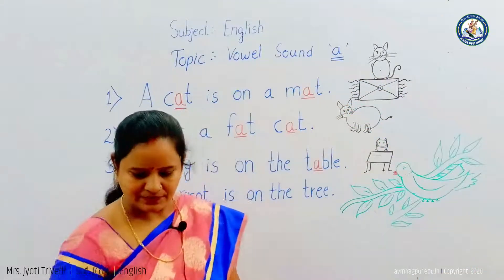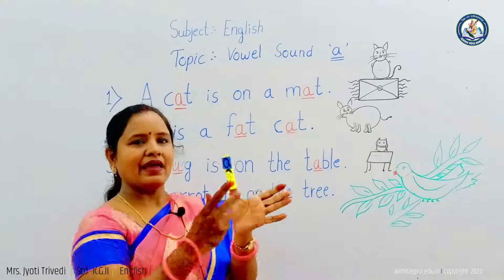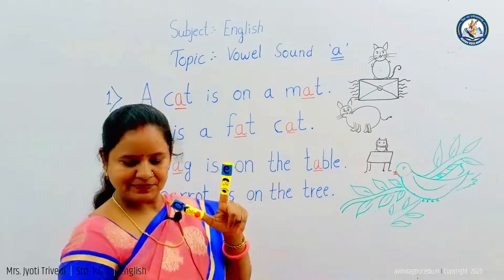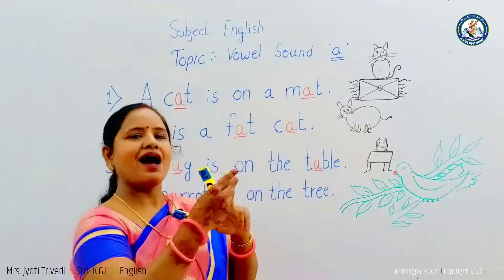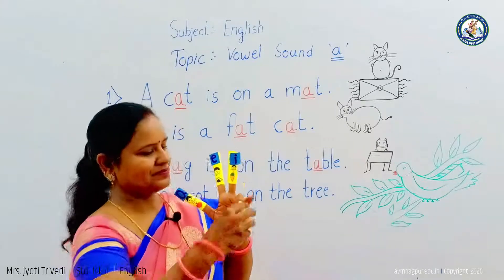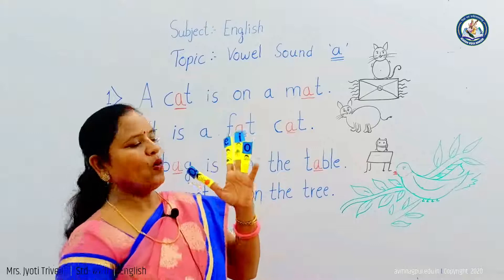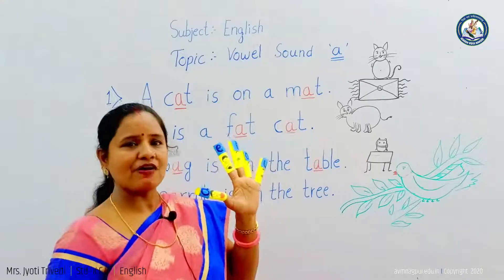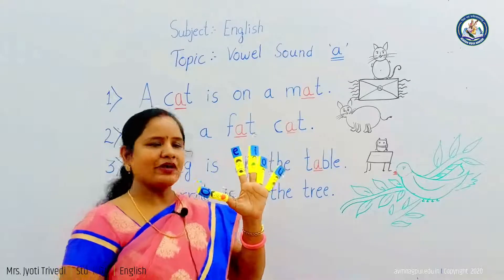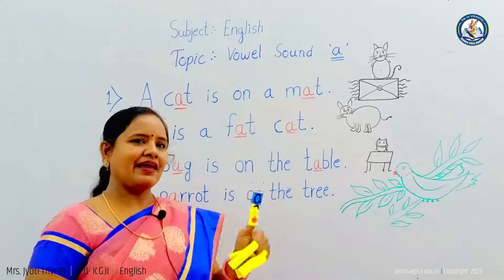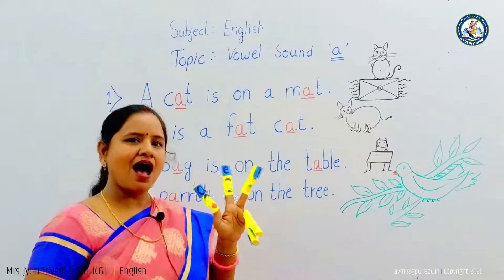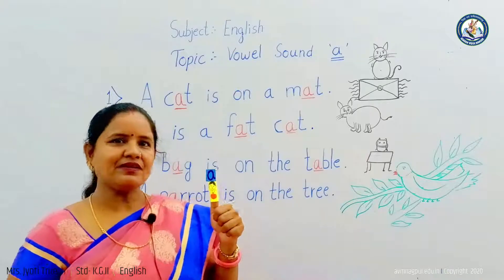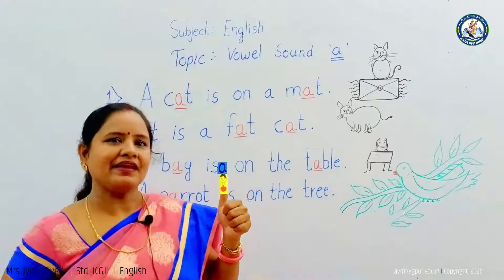See here. There are five vowels: A, E, I, O, and U. How many vowels are there? A, E, I, O, U. Now let's learn the sound of vowel A.